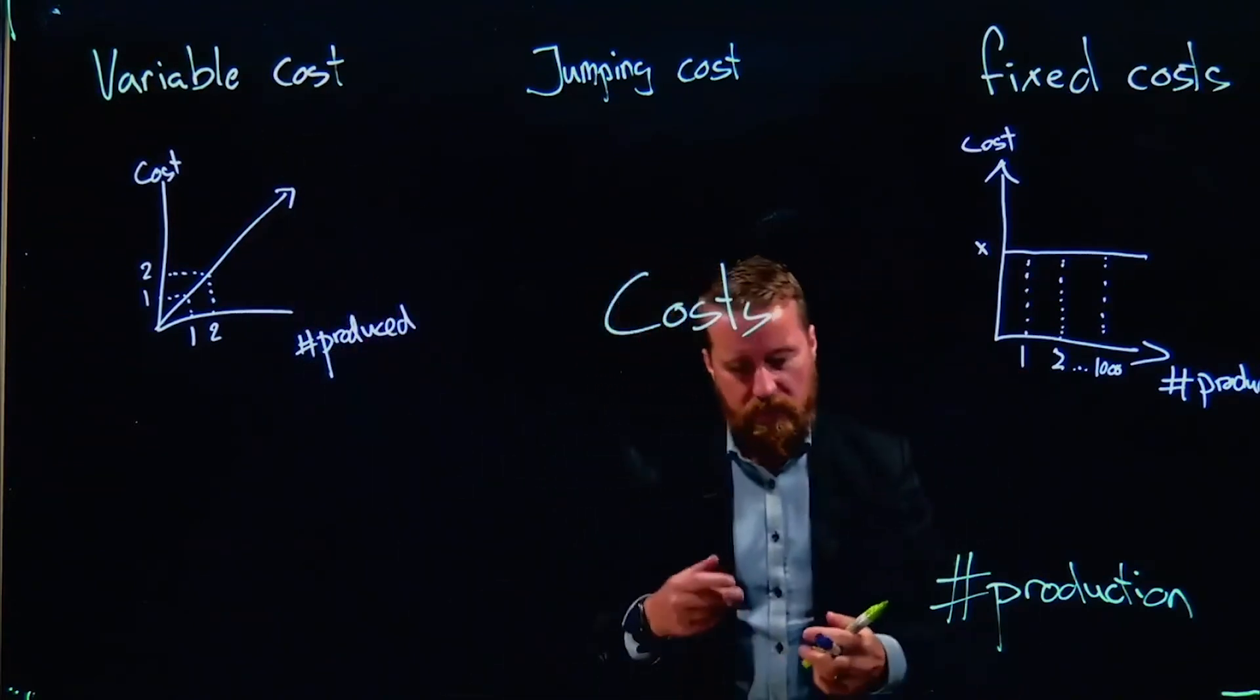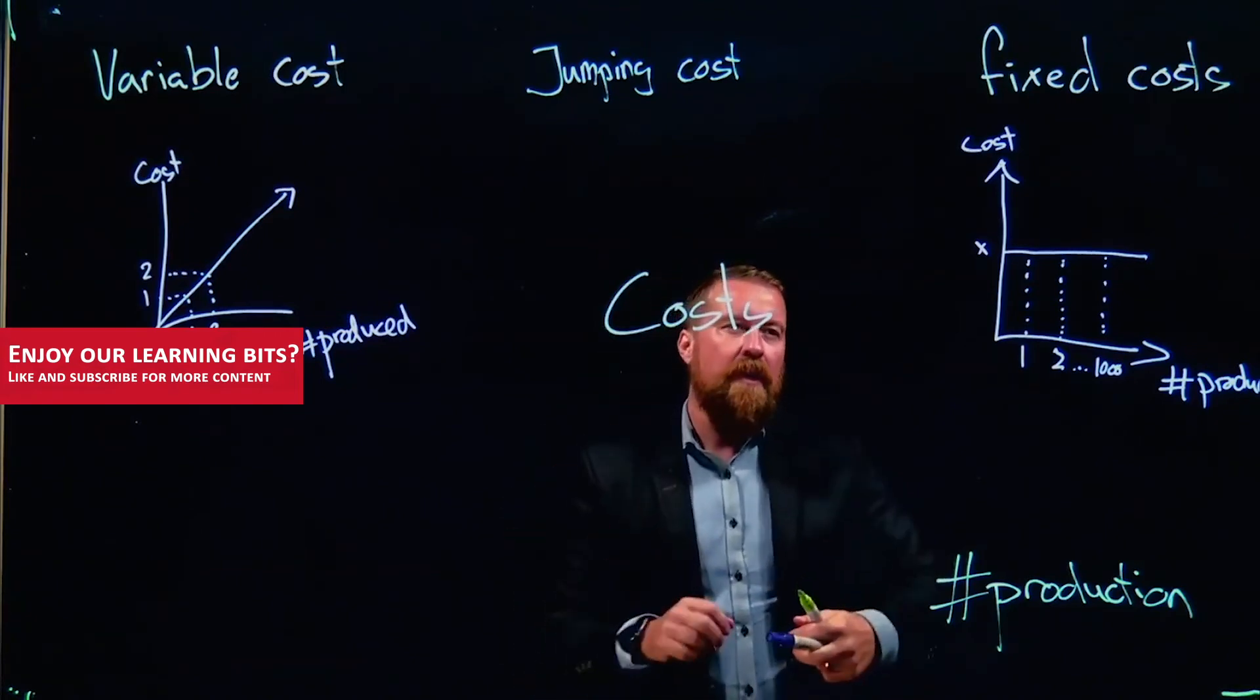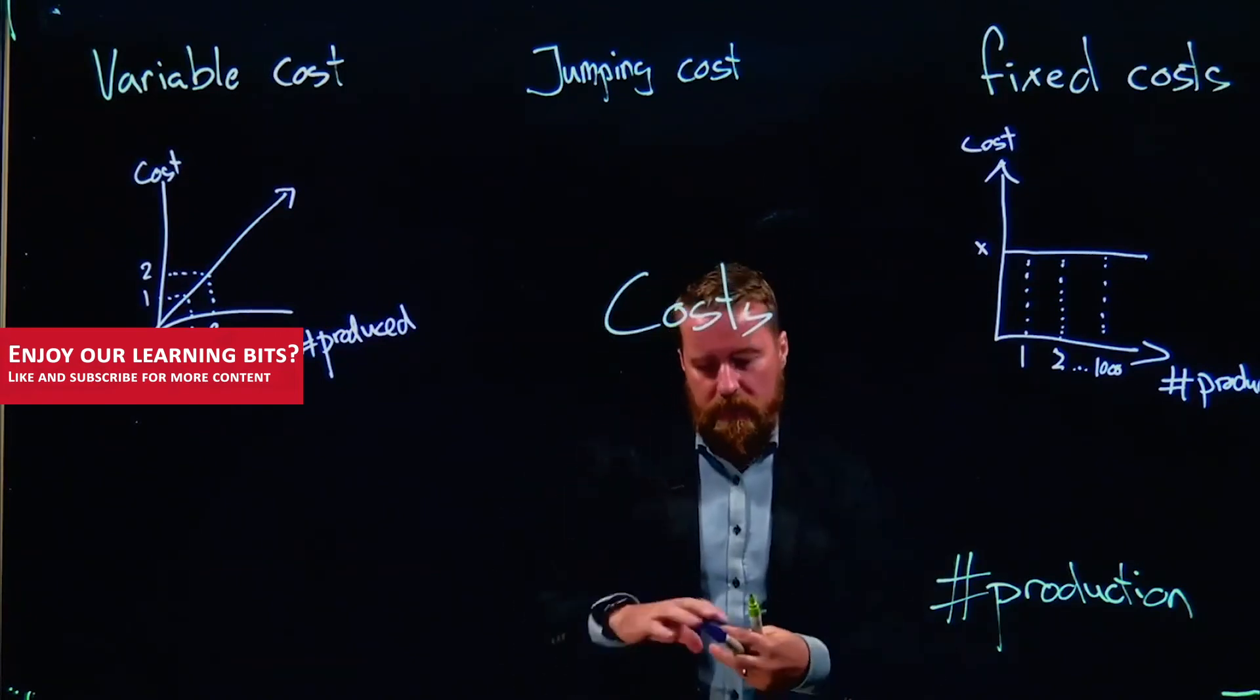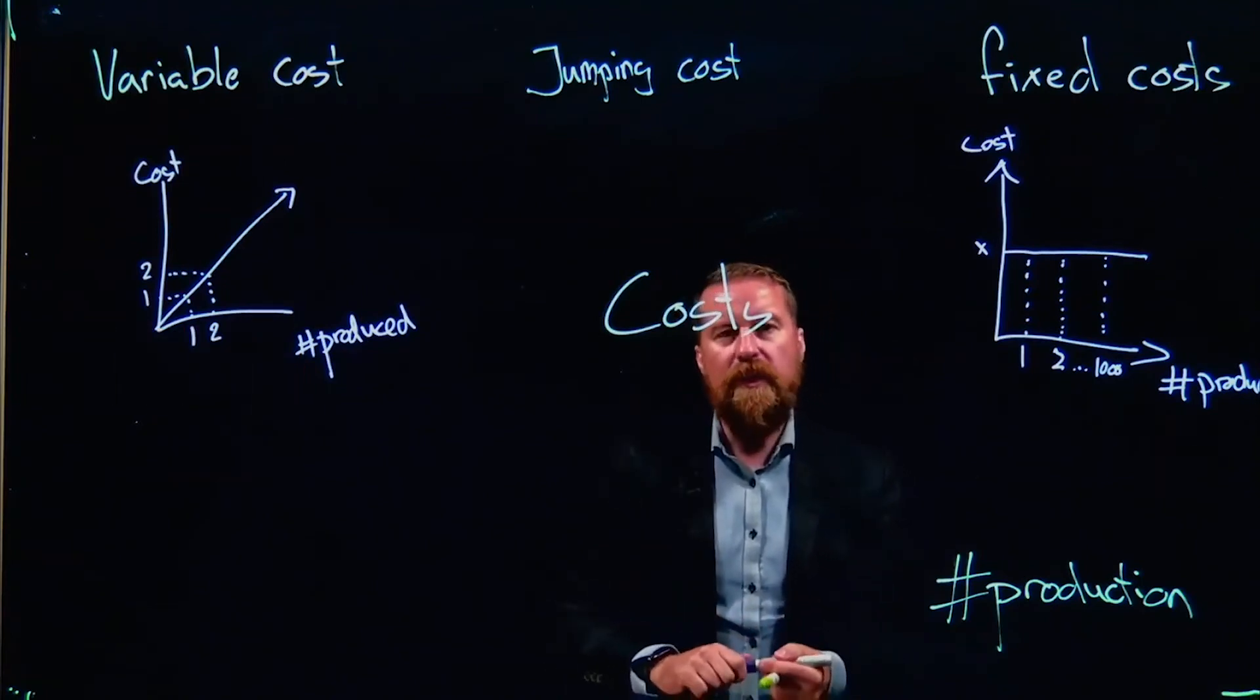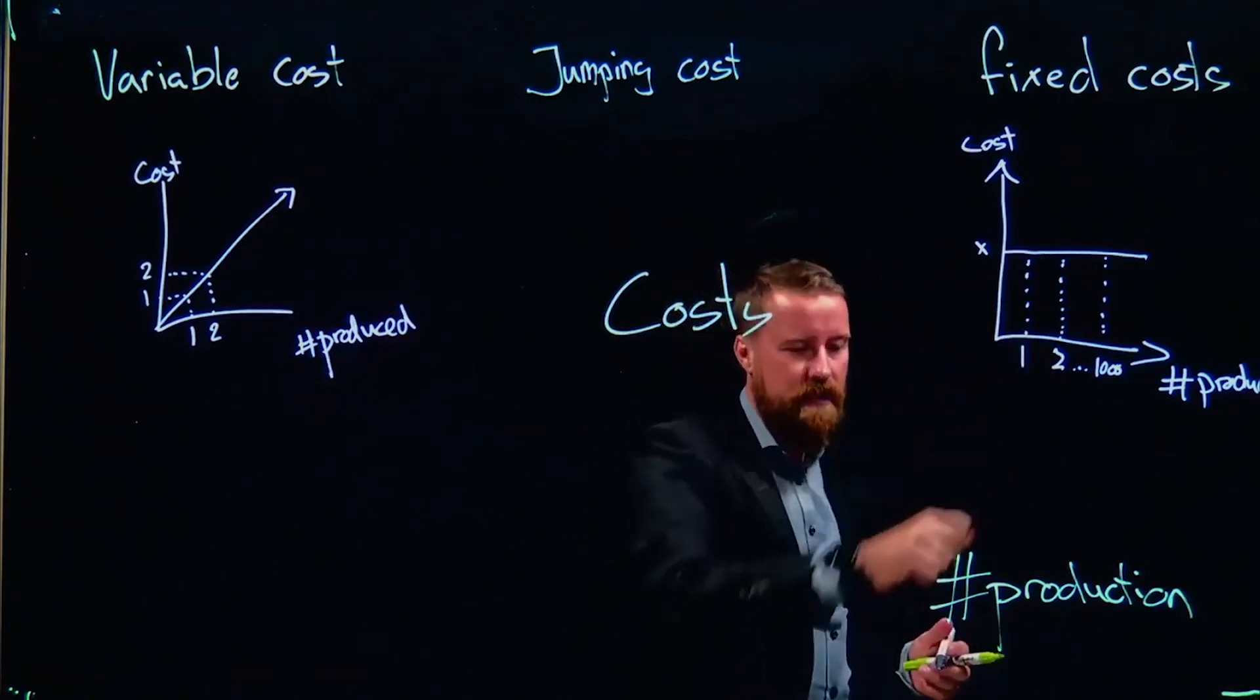And here is variable costs. Then we have this confusing thing, these jumping costs, because there are things which we're looking at which don't really follow the number of products and don't really stay the same.